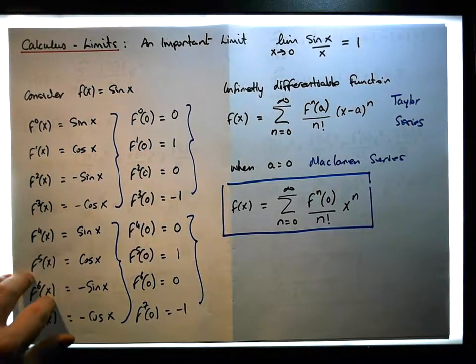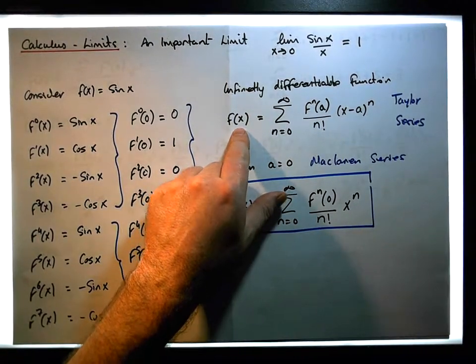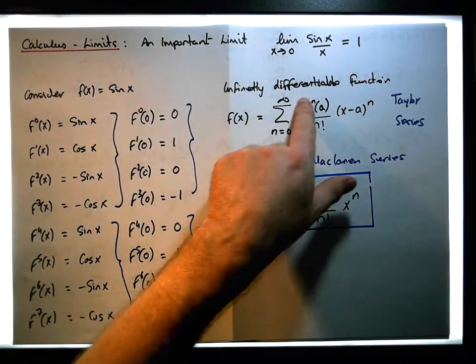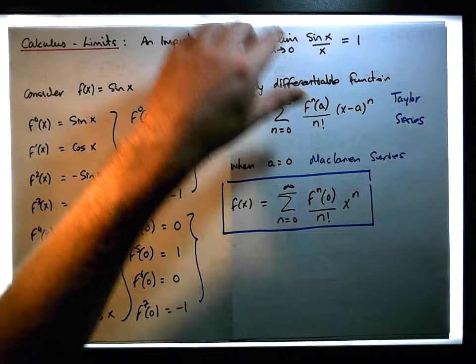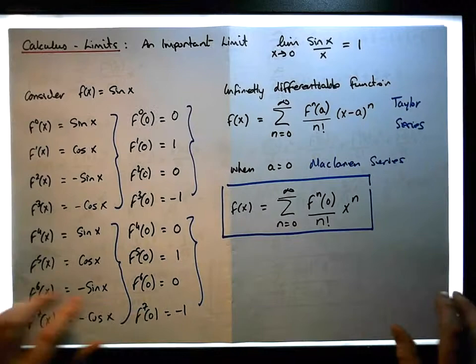And when a function is infinitely differentiable, which trigonometric functions of this particular type are, what we can do is actually represent the trigonometric function as an infinite summation of its derivatives. That's the Taylor series. And then when a equals 0, we actually end up with the Maclaurin series.